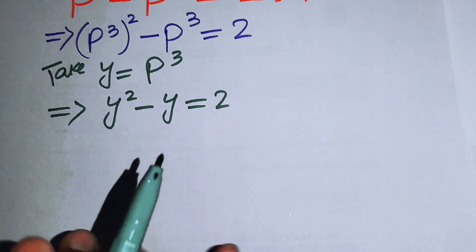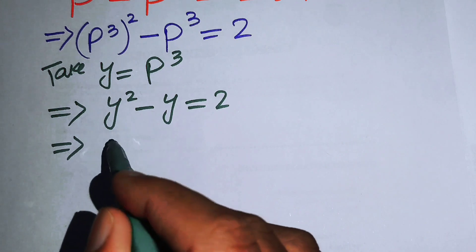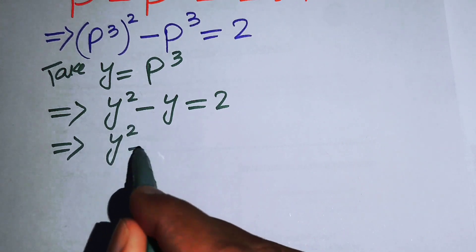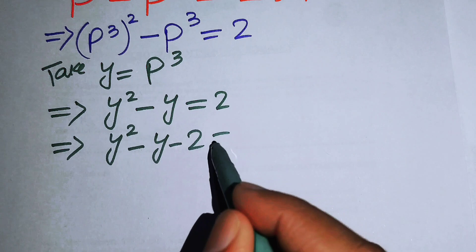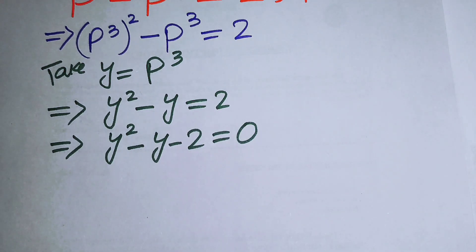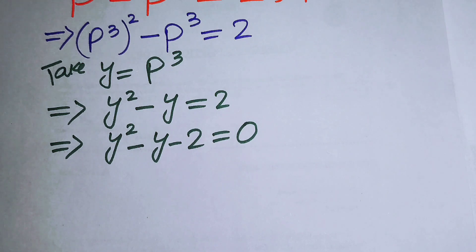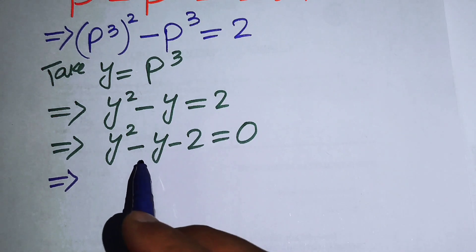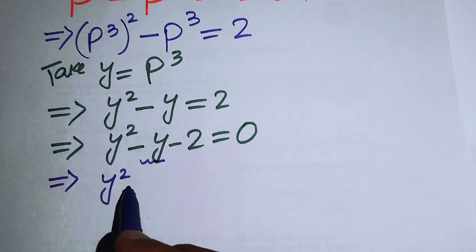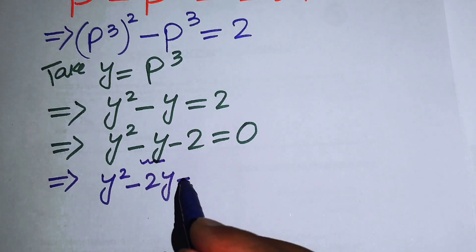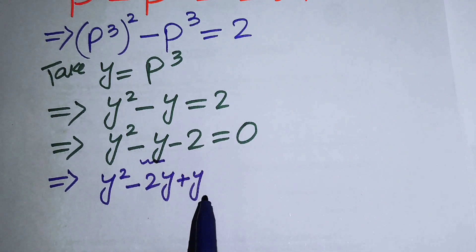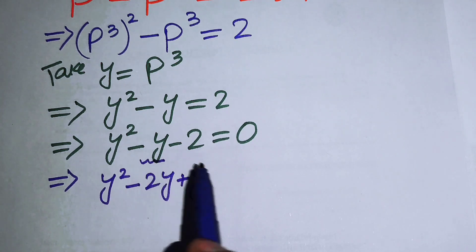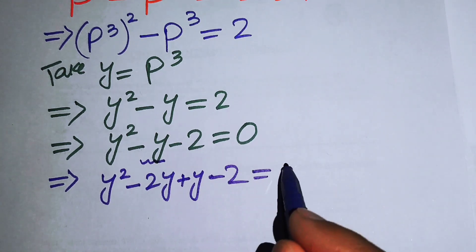In the next step we move 2 to the left-hand side and get y squared minus y minus 2 equals 0.